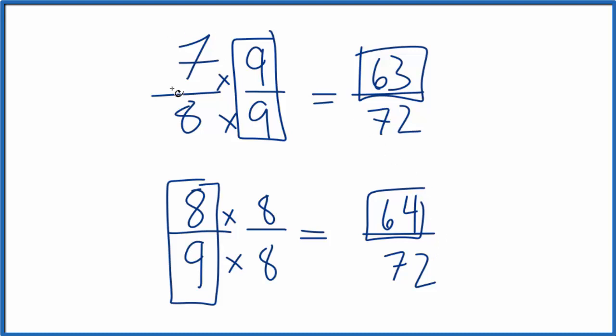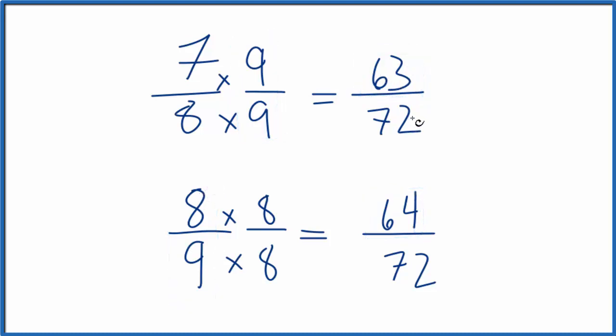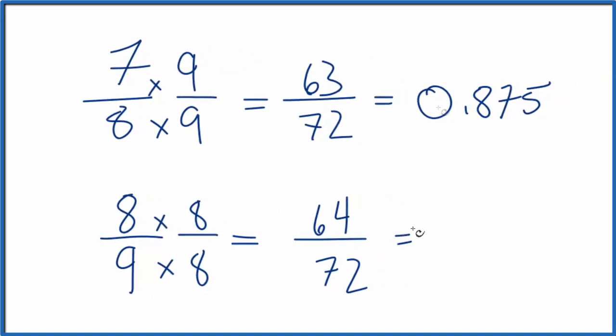We could also convert these fractions to decimals and compare those. So 63 divided by 72, or 7 divided by 8, that gives us 0.875. 8 divided by 9, or 64 divided by 72, either way, gives us 0.888, and that 8 just keeps repeating. So let's just put a bar there.